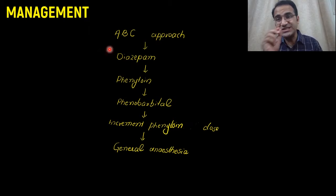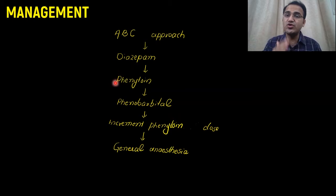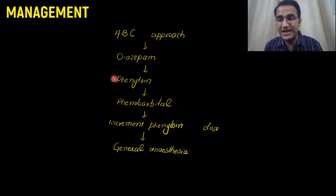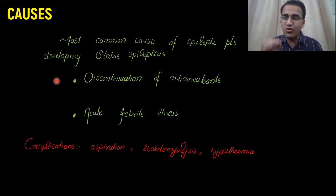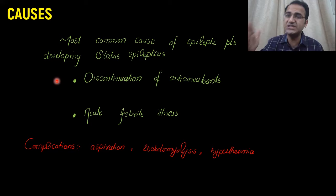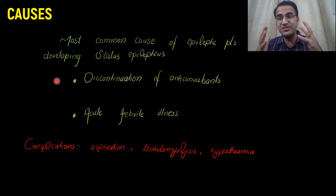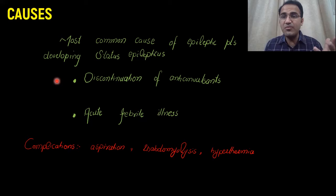In summary, we started treatment with the ABC approach, then gave diazepam to control the seizure. If not controlled, we gave phenytoin. If still not controlled, we added phenobarbitone, then incremented the phenytoin dose, with a maximum infusion rate not exceeding 50 mg per minute. If still uncontrolled, the patient is shifted to ICU for general anesthesia. The most common causes are discontinuation of anticonvulsant drugs — non-compliance with medication — or any acute febrile illness or active infection precipitating status epilepticus.